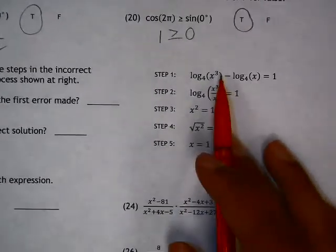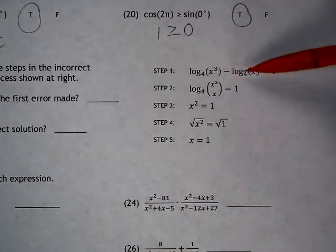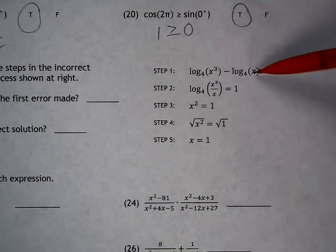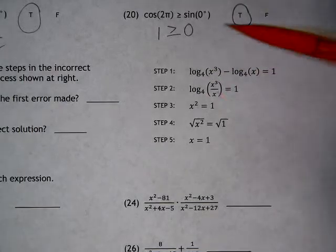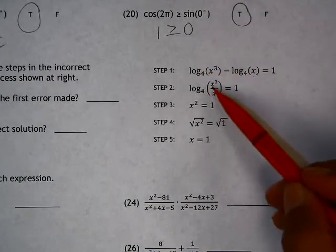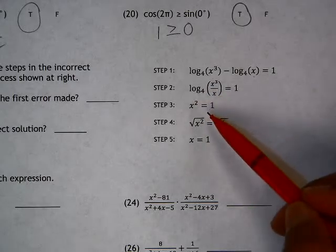So let's look at each of these steps and see where the error is. Here we have log x cubed minus log x, both with the same base. The quotient property does allow us to divide x cubed by x and write it as one log.